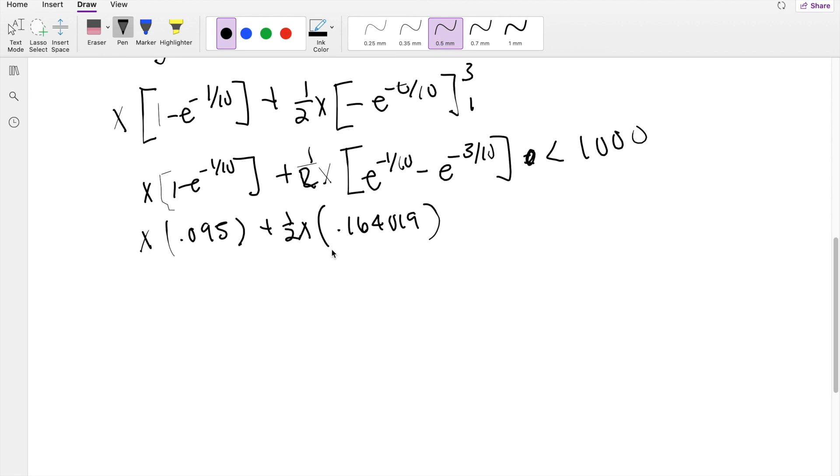So I can divide this by 2, and you get 0.082009X plus 0.095X, which has to be less than 1,000.